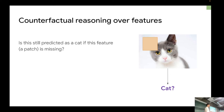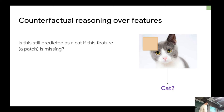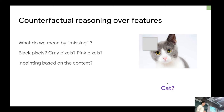Counterfactual explanation is super important for human-like explanations. How do we do counterfactual explanation with image classifiers? One counterfactual question is: what happens if you remove a certain feature — is it still going to be predicted as a cat? One possibility is to block one of the cat's ears and ask if it's still a cat, or compute the score and subtract the original score from the current score. One caveat is we don't have a very good definition of what we mean by 'missing' — do you mean black pixels, gray pixels, or pink pixels?